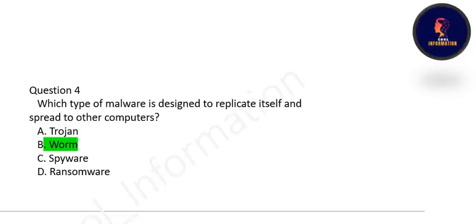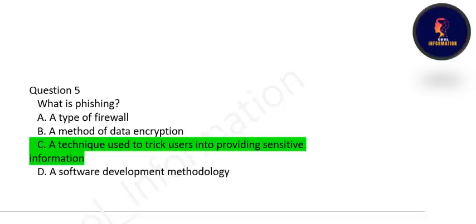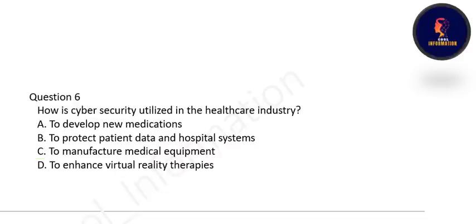Next question: what is phishing? Is it a type of firewall, a method of data encryption, or a technique used to trick users into providing sensitive information? The correct option is C — phishing is a technique used to trick users into providing sensitive information.